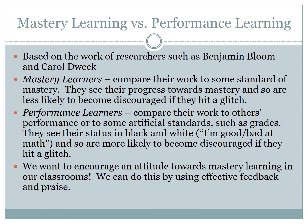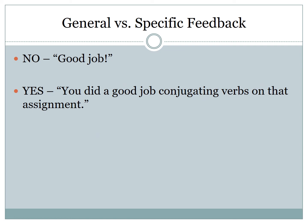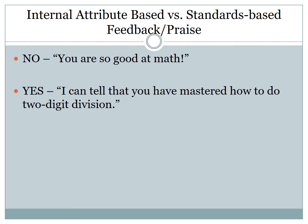Surprisingly, one of the ways we can encourage mastery learning is by using effective feedback and praise. Good feedback is not general — we don't say 'good job' because the student doesn't really know what the good job is. Instead, make it specific: 'You did a good job conjugating verbs on that assignment.' It's also standards-based versus internal attribute-based. We don't say 'you're good at math' — that's an internal attribute. Instead, we base it on a standard or learning target: 'I can tell you've mastered how to do two-digit division.'